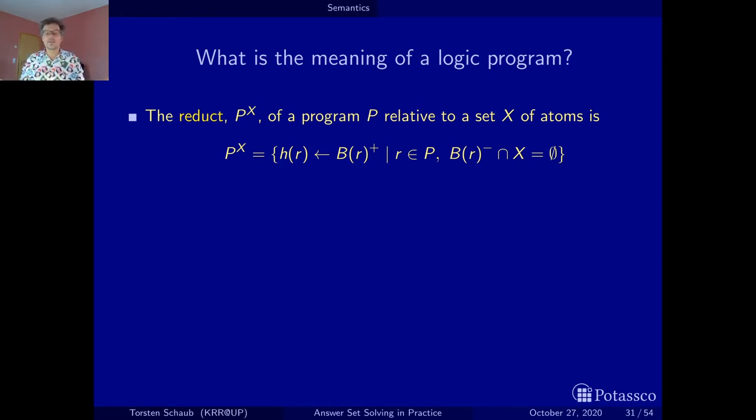The idea is we have a set X. This is the candidate model or the candidate set of atoms that you give me or I give you. And then we take this set and our program, we reduce the program to the reduct. We compute the smallest model or the smallest set closed under this resulting positive program. And if this is what we guessed initially, what I provided you as a candidate or you provided me, then that's a stable model. And that's it.